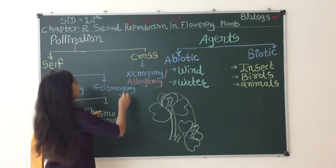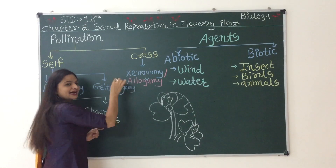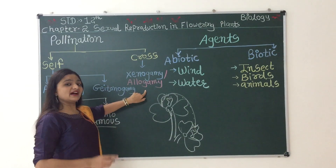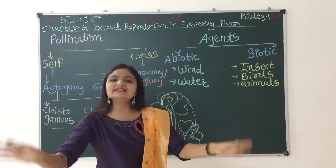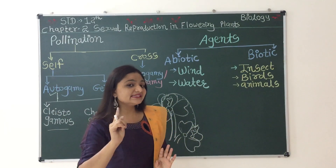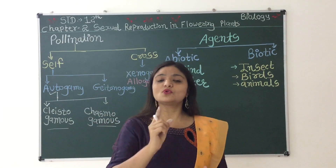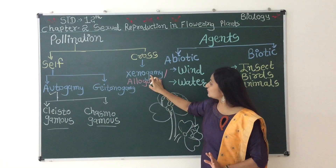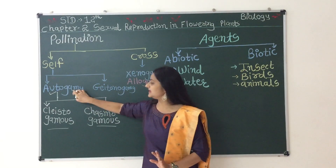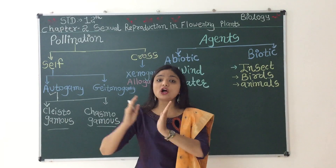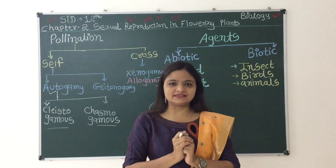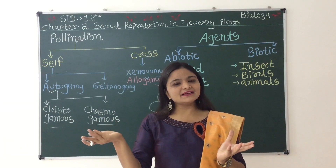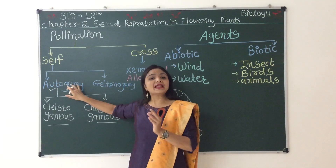Now for cross-pollination — we also call it xenogamy. Xeno means cross. So xenogamy means cross-pollination; it is the other name for cross-pollination. Here there are two plants and two flowers, but the species are the same. Now, the word 'gamy' — auto means self, gamy means fusion of gametes, meaning fusion of male and female gametes. Auto means self and gamy means fusion.